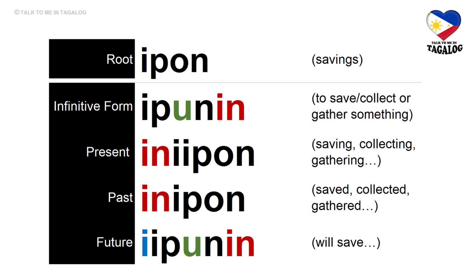Root word: ipon — it means savings. Infinitive form: ipunin — to save, collect, or gather something. Present tense: iniipon — saving, collecting, or gathering. Past tense: inipon — saved, collected, or gathered. Future tense: iipunin — will save, will collect, or will gather something.